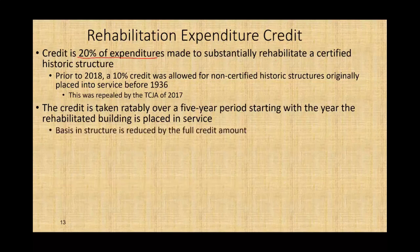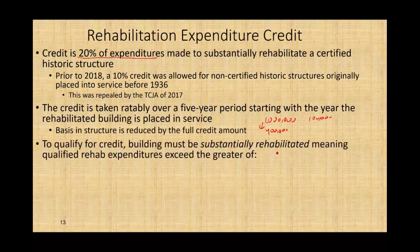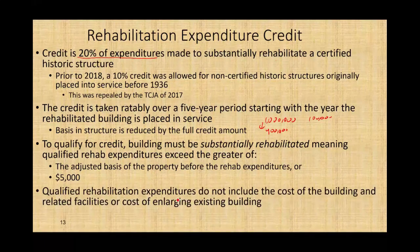The basis in the structure must be reduced by the full credit amount. If a building is worth $1 million and you get a $100,000 credit, your basis drops to $900,000 — because you need to recapture that credit when you sell. To qualify, the building must be substantially rehabilitated, meaning qualified rehab expenditures exceed the greater of the adjusted basis before rehab or $5,000. Rehab expenditures do not include the cost of the building itself or the cost of enlarging existing buildings.